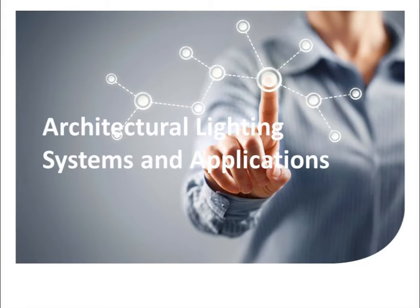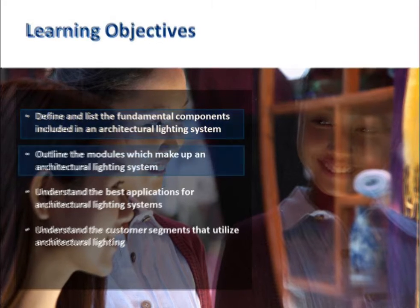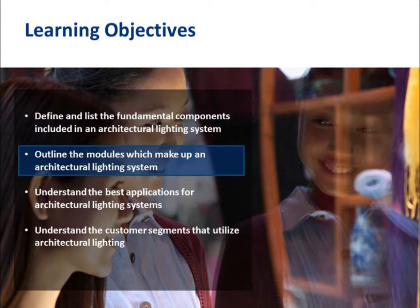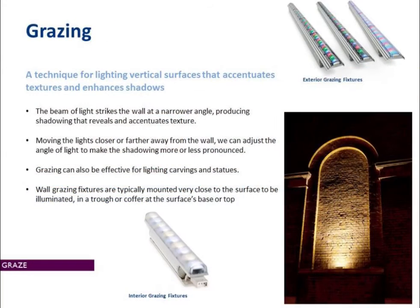Hi, and welcome to part two in our three-part series on architectural lighting systems and applications. In our first session, we defined and listed the fundamental components of an architectural lighting system, and looked at the modules of that system and what to consider when selecting them. Now we're going to understand the best applications for an architectural lighting system — specifically, what lighting applications really highlight architecture.